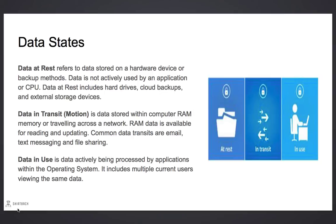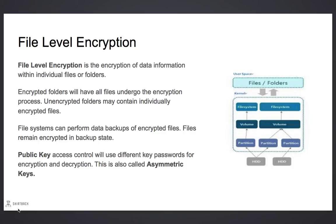Data in use is information actively processed by applications within the operating system. It includes multiple current users viewing the same data. File level encryption is the encryption of data within individual files or folders. Encrypted folders will have all files contained within also undergo encryption.